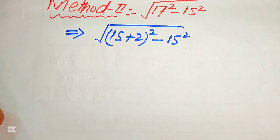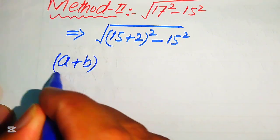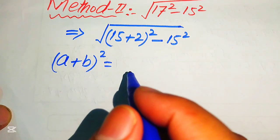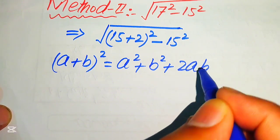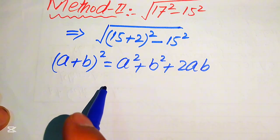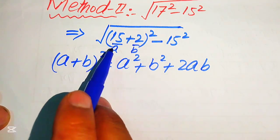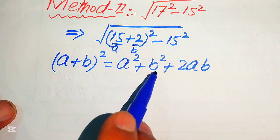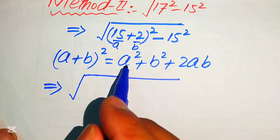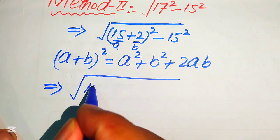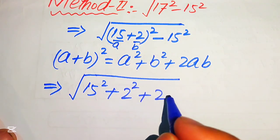In the next step we apply the algebraic formula: (a plus b) whole squared equals a squared plus b squared plus 2ab. Here our a is 15 and our b is 2. Putting these values into the right-hand side, the expansion becomes: 15 squared plus 2 squared plus 2 times 15 times 2, minus 15 squared.